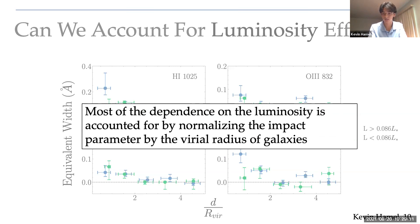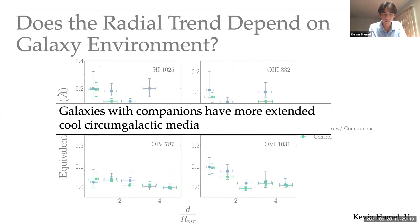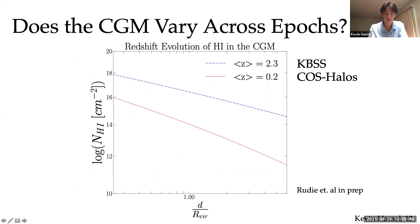Now we can ask questions like, is there a dependence on the galaxy environments? The data points in blue, shown in the lighter background, are galaxies that have companions detected for them. And the green dots represent galaxies that we did not find companions for. You can see that overall, galaxies with companions have more extended, cool, circumgalactic media.